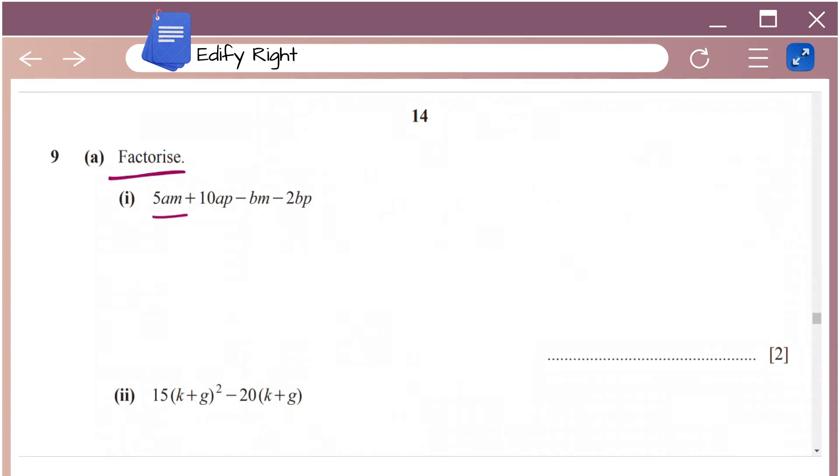Here we have factorize 5am plus 10ap minus bm minus 2bp. Let's start. Let's try to figure out what's common in the first two terms. So that's 5a brackets m plus 2p. Now let's take minus b as the common part in the other two terms, which is m plus 2p. So we get 5a minus b into m plus 2p.